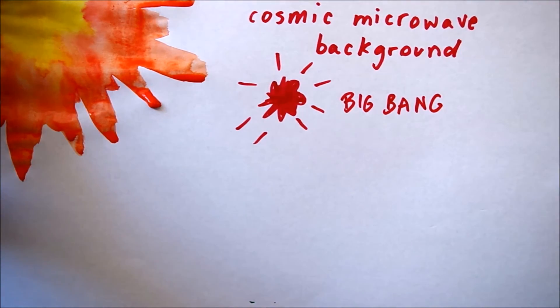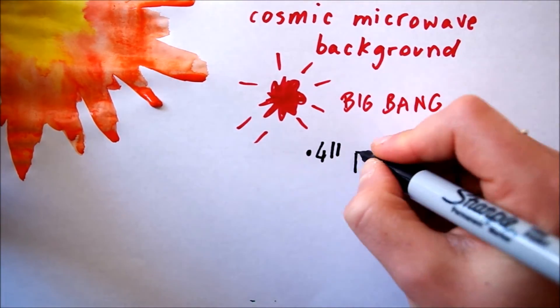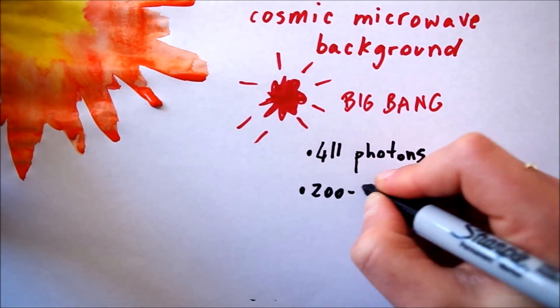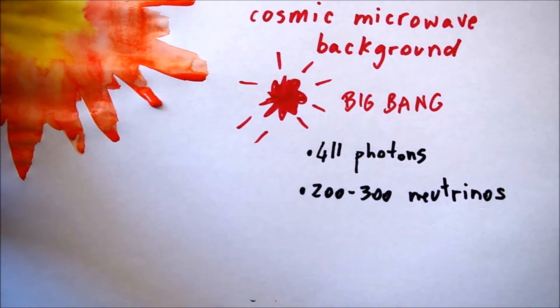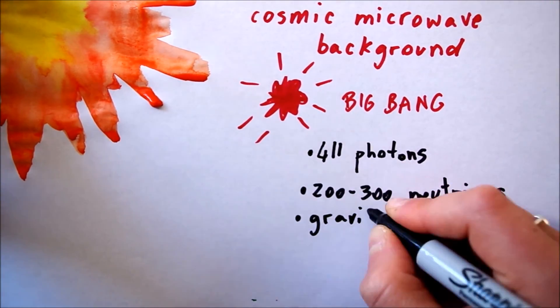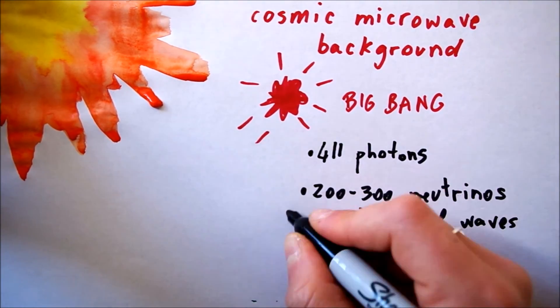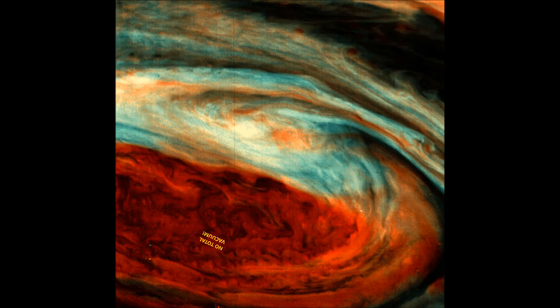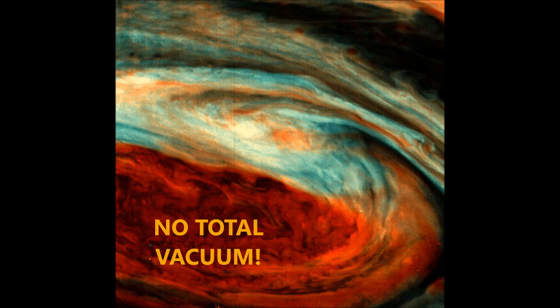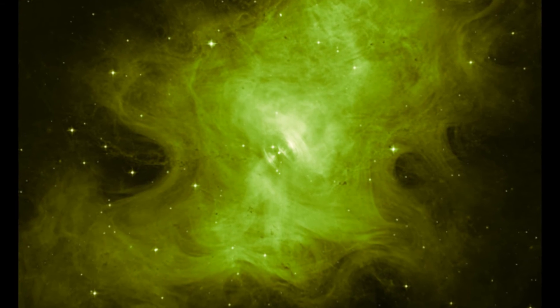Therefore, in void bubbles we still find 411 photons per cubic centimeter, 200 to 300 neutrinos and anti-neutrinos per cubic centimeter, and probably gravitational waves and particles of the so-called dark matter. Finally, there is no such thing as a total vacuum, but the cosmic voids are the closest we can get.